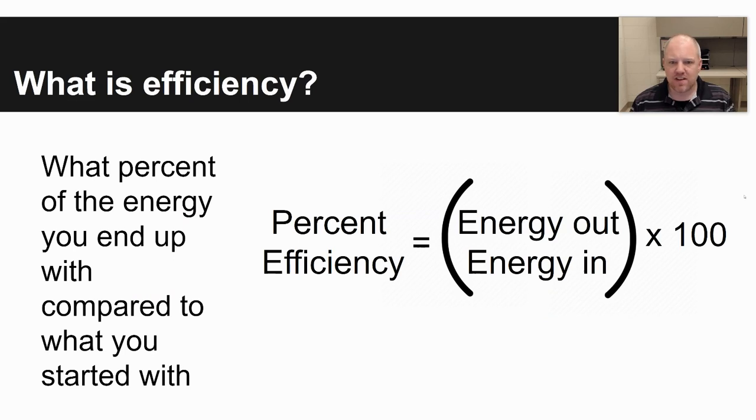So first of all, what is efficiency? Efficiency is the percent of energy that you end up with compared to the energy that you started with. And so how do you calculate percent efficiency? You take your energy out divided by energy in times 100. There are no units for this, it is just a percentage that you come up with as an answer.